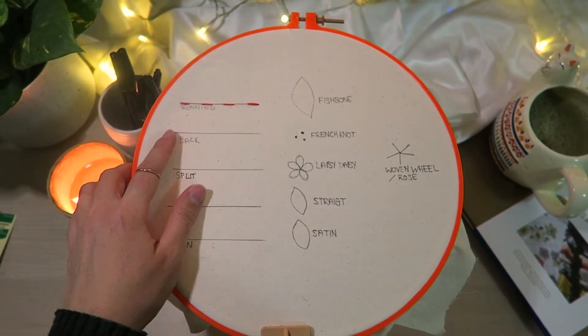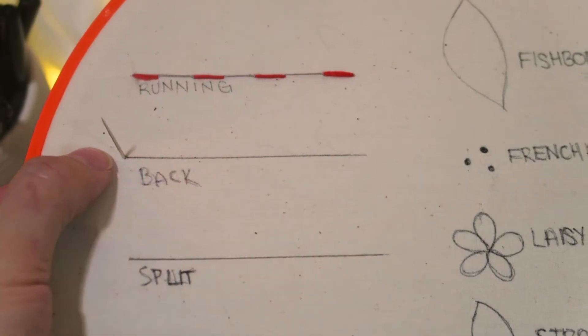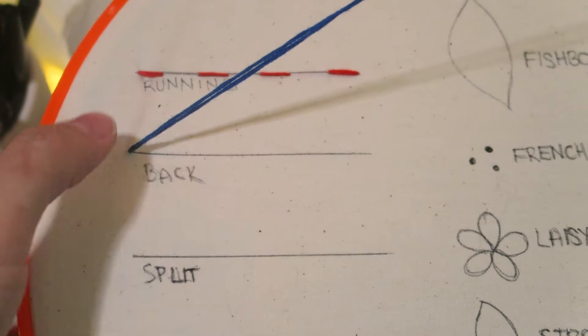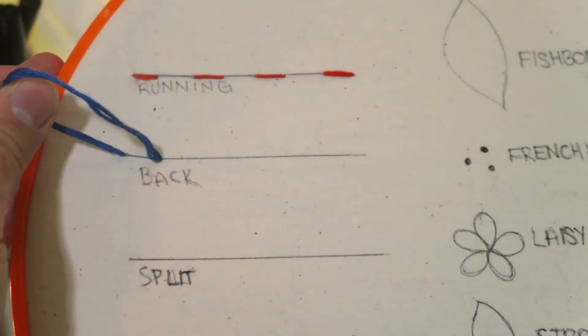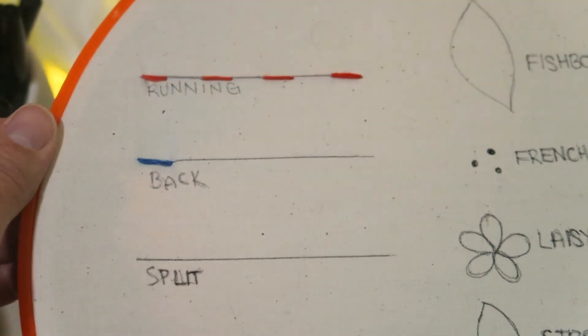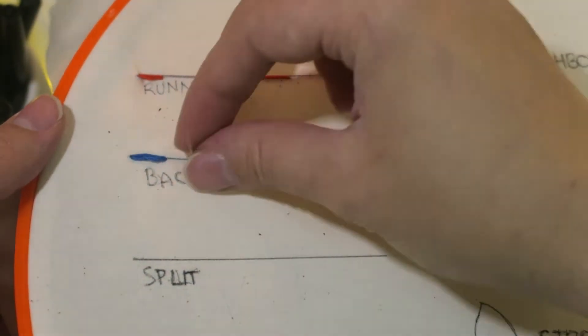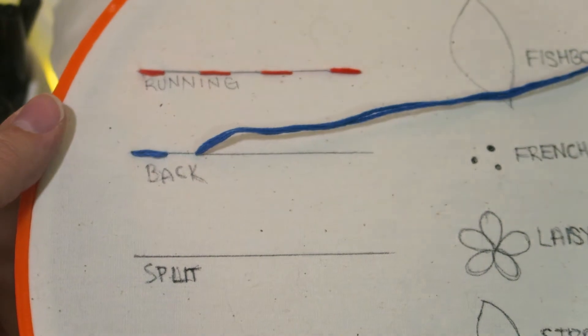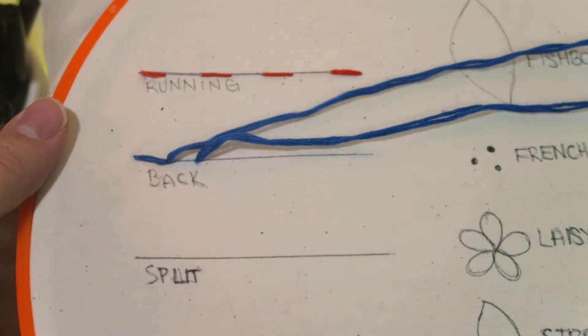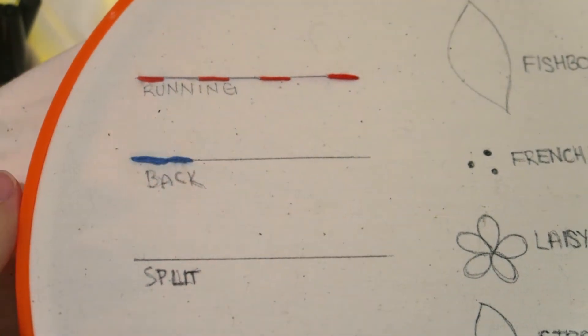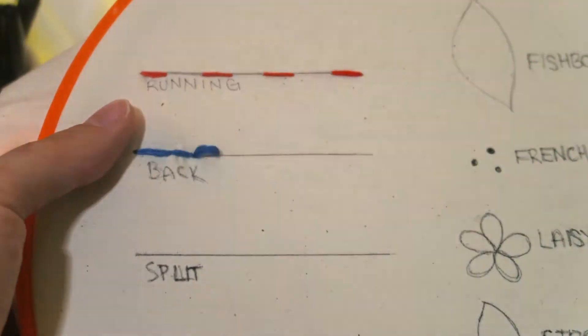Our second stitch is the back stitch. Again start at the back of the hoop and pull the needle and thread all the way to the front, and then do another stitch to the back from the top of the fabric. Come back up about a stitch length away and enter the same hole as we used to enter our first stitch. Repeat this process until you are done.